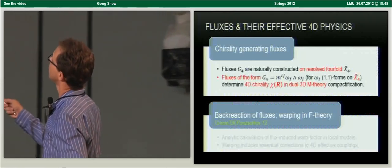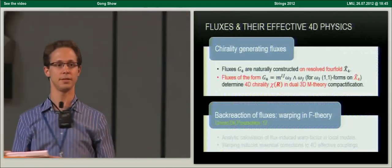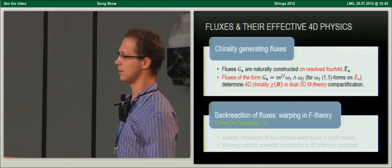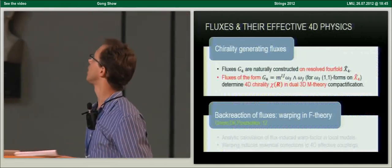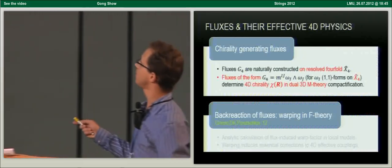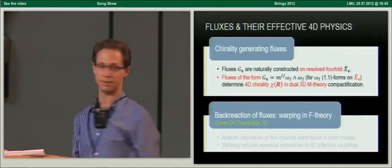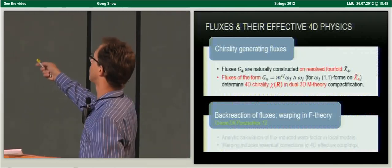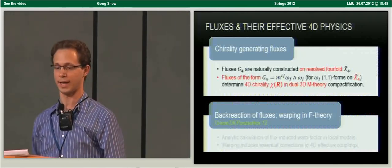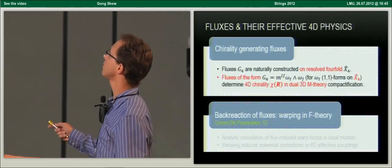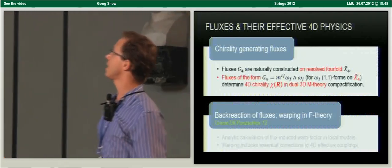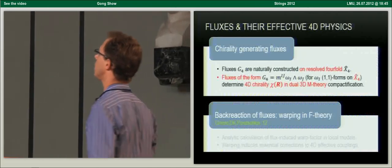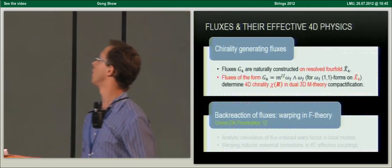In my first point, I would like to present an interesting perspective on how these fluxes generate four-dimensional chirality in F-theory. G4 fluxes are naturally constructed not on the original singular four-fold, but on the resolved four-fold X4-hat. Certain fluxes that are the wedge product of 1-1 forms on this resolved geometry are known to generate 4D chirality. I want to argue that this can be seen in a three-dimensional dual N=2 theory.